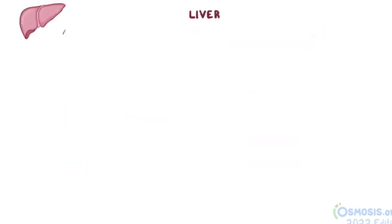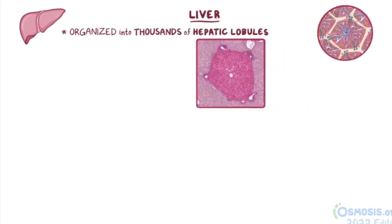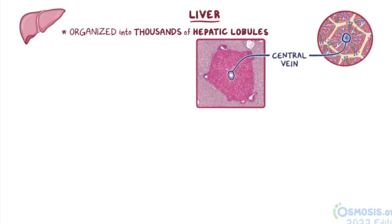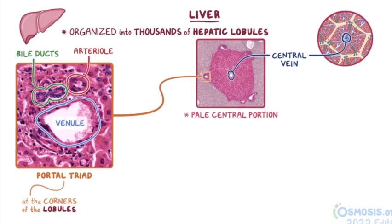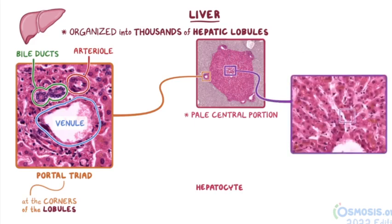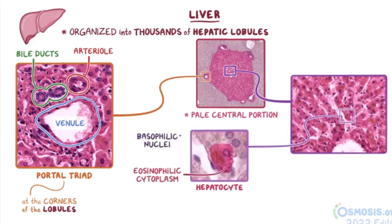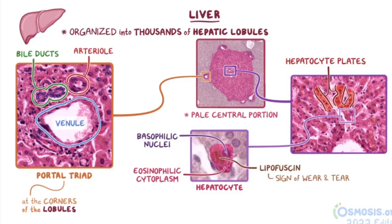As a quick recap: the liver is organized into thousands of hepatic lobules. At lower magnification, the lobules can be identified by their prominent central vein, as well as a slightly pale central portion compared to the edges. The portal triads are found at the corners of the lobules, each containing a portal venule, hepatic arteriole, and bile duct. The venule has a large lumen and thin wall; the arteriole has a thicker wall but smaller diameter; and the bile duct is identified by its simple cuboidal epithelium. The hepatocytes are large polygonal cells with eosinophilic cytoplasm and basophilic nuclei, organized into branching plates that radiate out from the central vein. Lipofuscin is a sign of wear and tear seen within hepatocytes as fine brown granules.